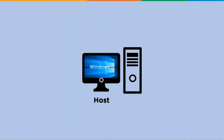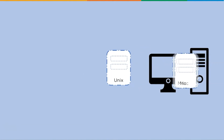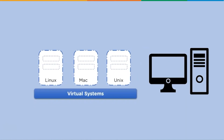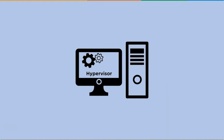For example, consider a system installed with the Windows operating system, officially known as the host OS. The virtualization software known as the hypervisor runs on this host OS, and using the hypervisor we can have multiple instances of different operating systems — including Unix, Mac, and Linux — which are known as virtual systems or guest OS. The working of virtualization is only possible using a hypervisor.